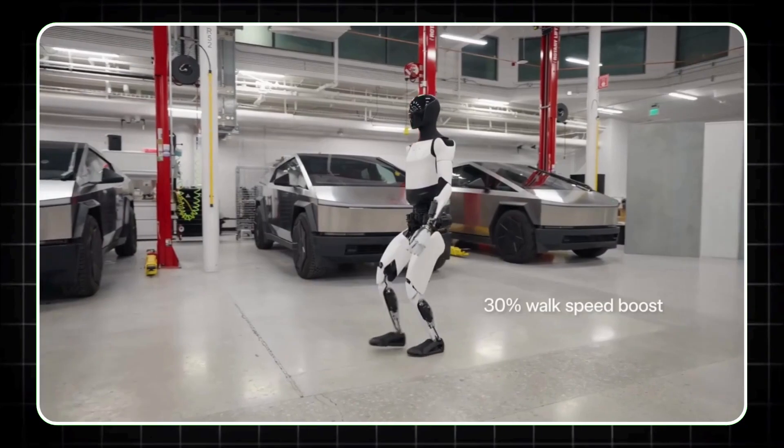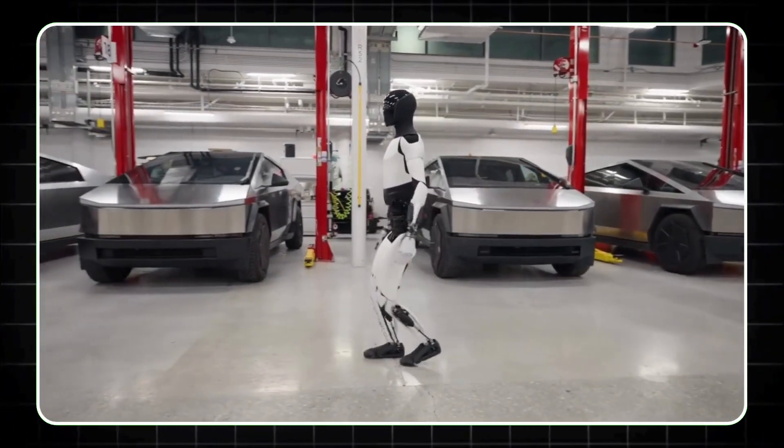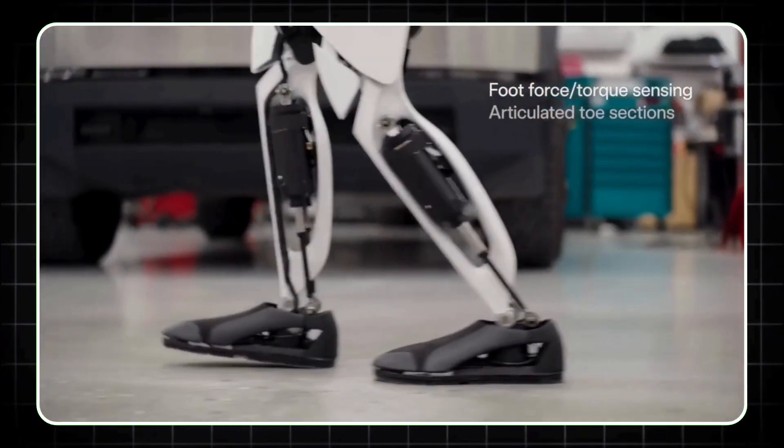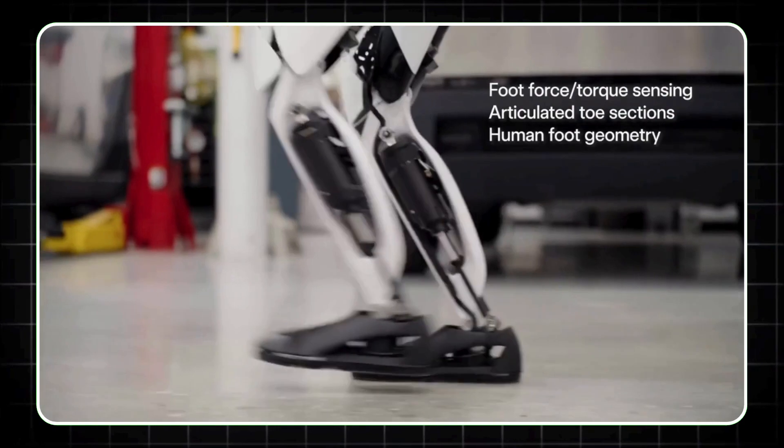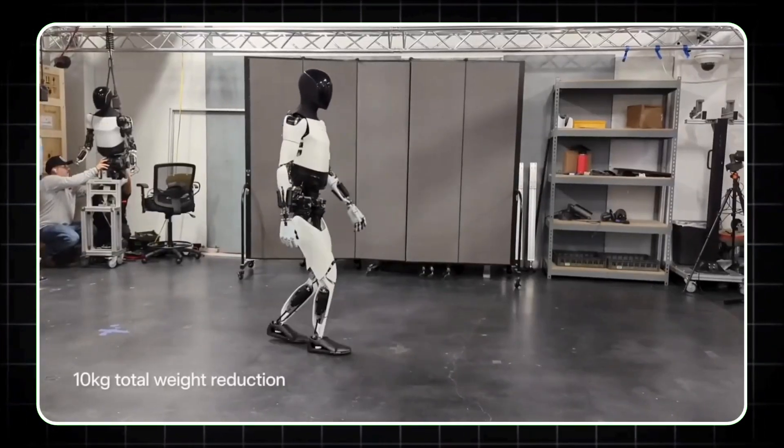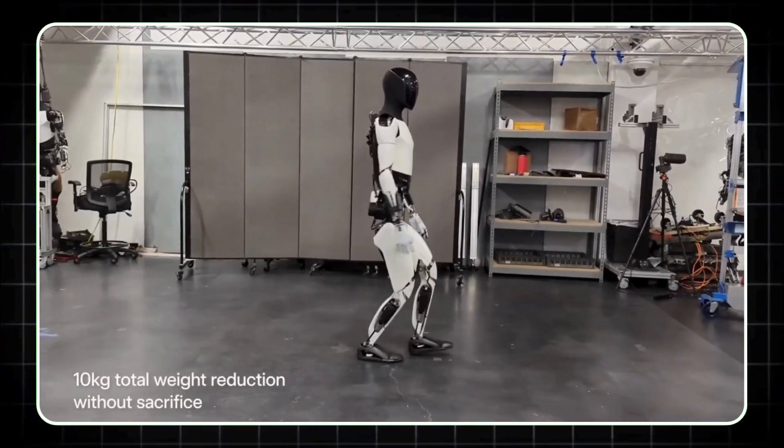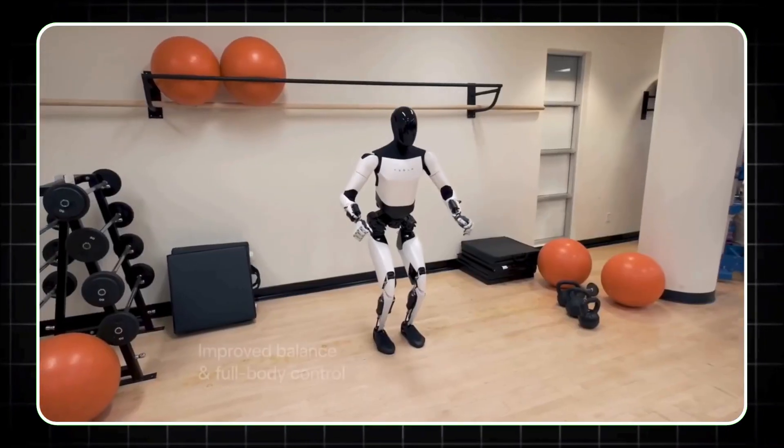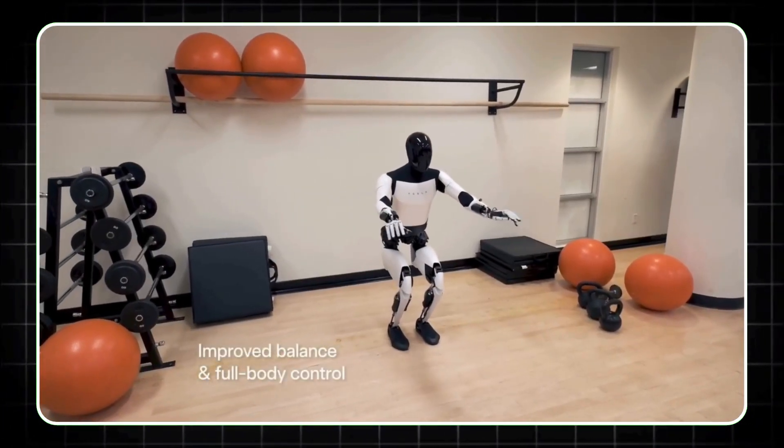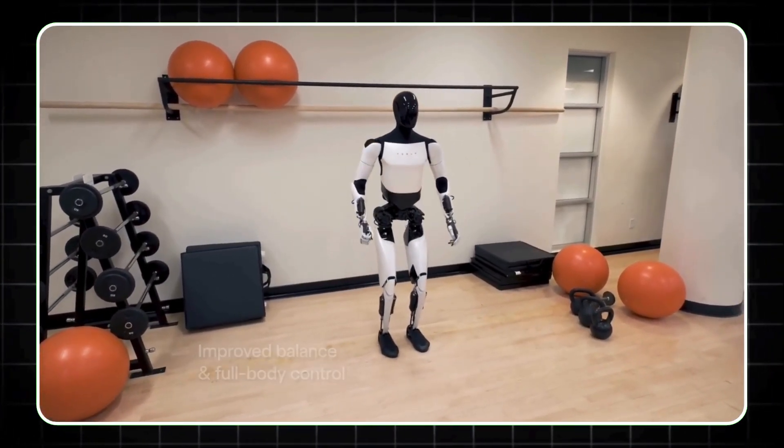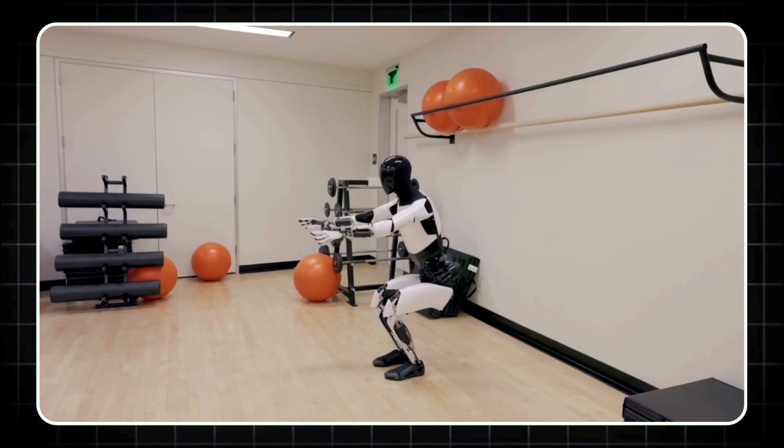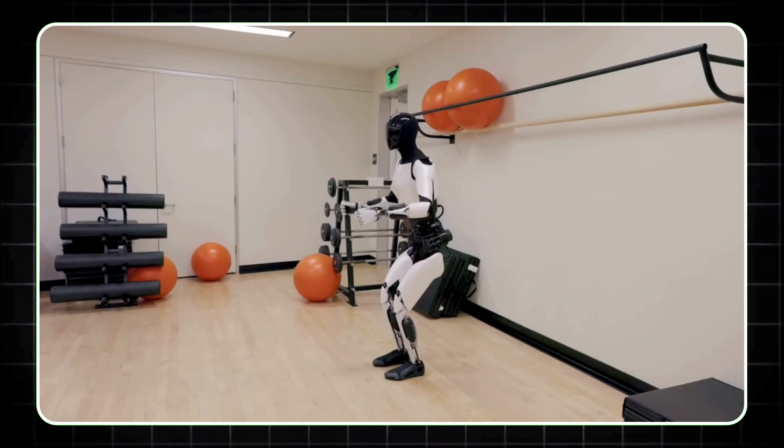Tesla aims to deploy this robot in its factories, where it can seamlessly integrate into existing workflows. Imagine a future where robots like Optimus take on the heavy lifting, allowing humans to focus on more creative and strategic tasks. With plans for consumer use by 2025, the Optimus Gen 2 is not just a factory worker—it's a glimpse into the everyday life of tomorrow.